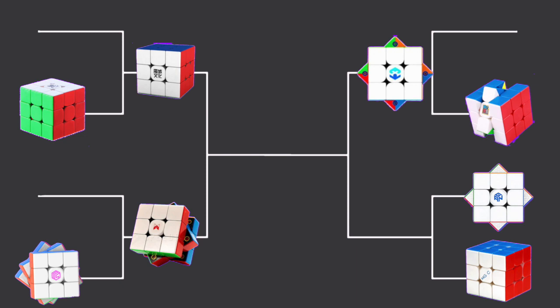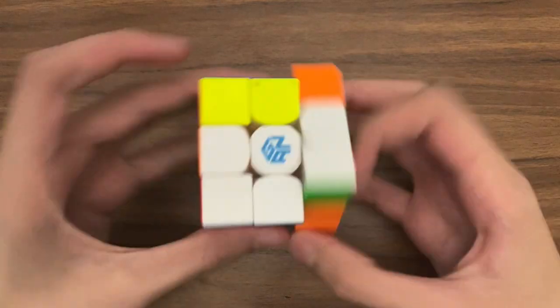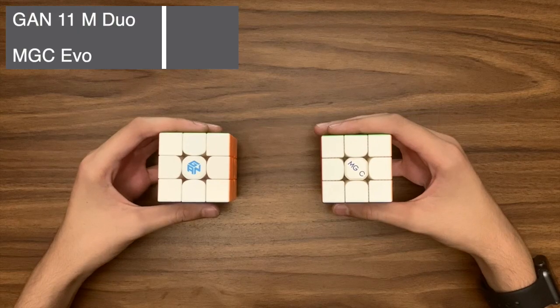And finally, in the first round, we have the GAN 11M Duo versus MGC Evo. I think the Duo has great turning and a smooth feeling paired with amazing corner cutting, which means the Duo wins on performance.